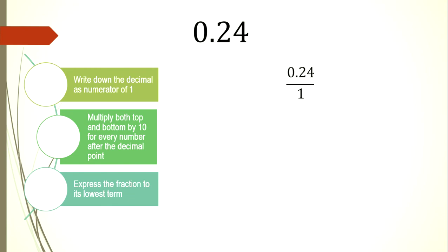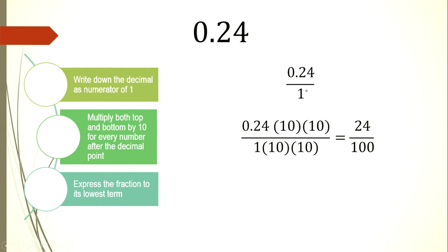For example, we have 0.24. The numerator is 0.24 and the denominator is 1. We have two numbers after the decimal point, so we multiply by 10 twice, or by 100. 0.24 times 100 is 24, and 1 times 100 is 100. So we get 24/100. Expressing that in lowest terms using the greatest common factor, which is 4: dividing both numerator and denominator by 4 gives us 6/25.